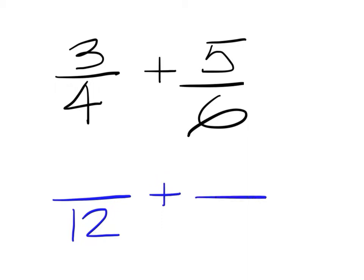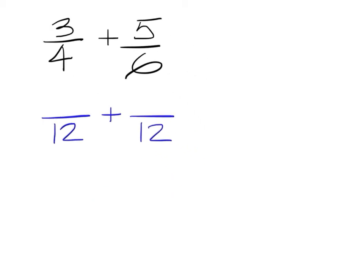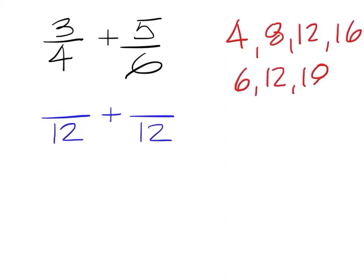If you don't remember how to find least common multiples, you just list out the multiples like this: 4, 8, 12, 16 — and then 6, 12, 18. Look what they share: 12 is the lowest one in common.